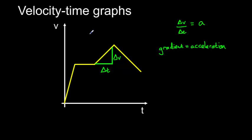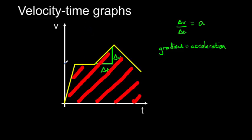The second thing we can learn from a velocity-time graph is done by measuring the area underneath the graph. If this graph was a straight line, we would have a rectangle here, whose area would be the velocity multiplied by the time.